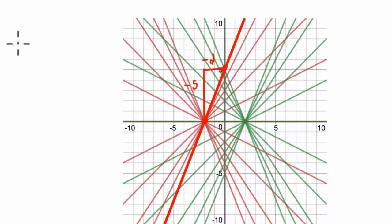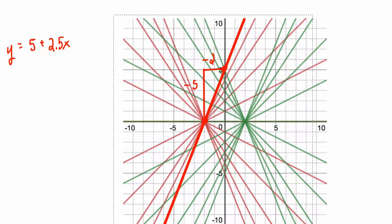So, let's just write it as our first equation, y is going to equal, well, our intercept was five plus 2.5x for the slope. So let me just clear this off now.